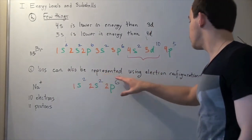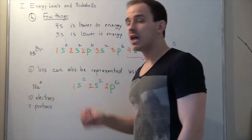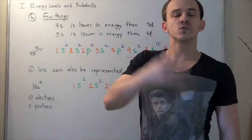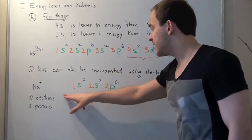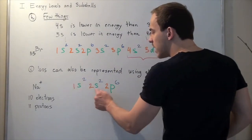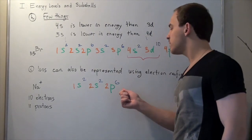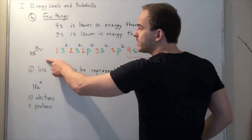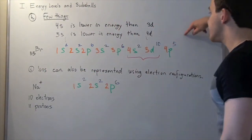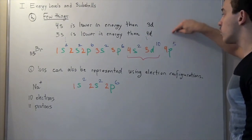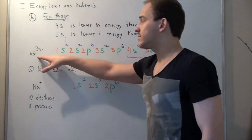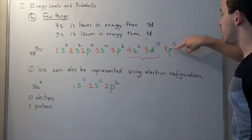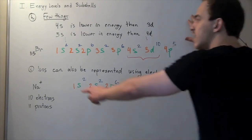Ions can also be represented using electron configuration. For sodium⁺, which has 11 protons and 10 electrons, we simply remove one electron from the highest energy level. So sodium⁺ is 1s² 2s² 2p⁶ — the 3s¹ electron is removed. For bromine, if we make it Br⁺ we take one electron away from the highest energy level, which is 4p. If we instead add one electron to make Br⁻, we add it to the highest energy level — 4p goes from 4p⁵ to 4p⁶.